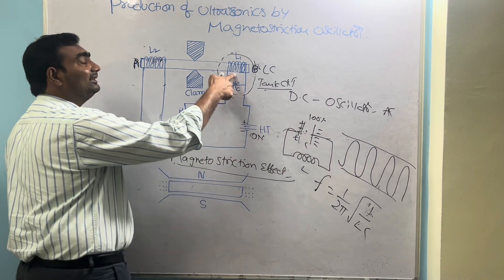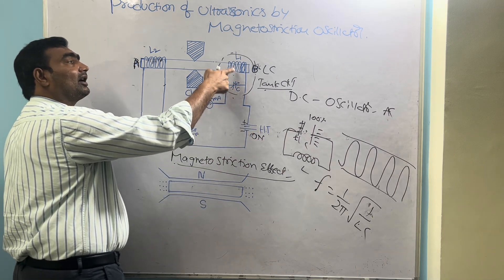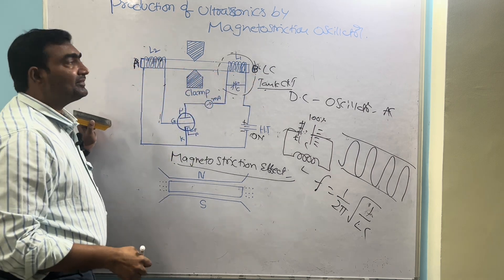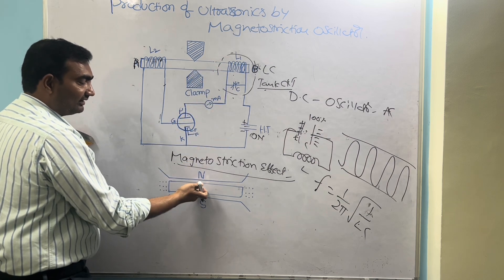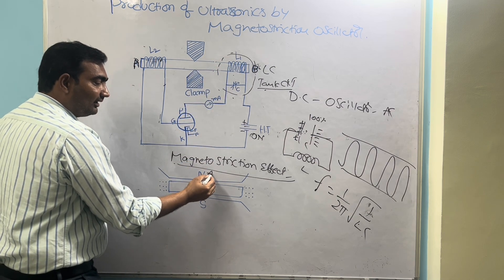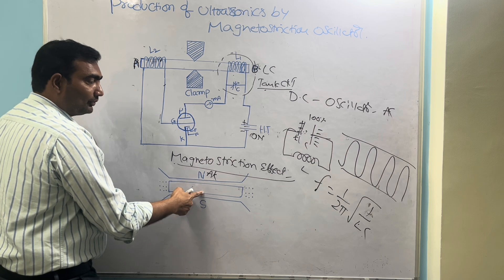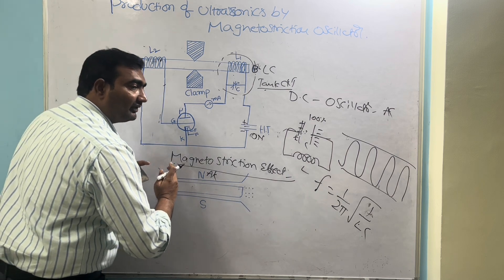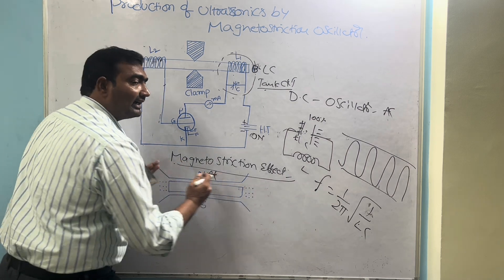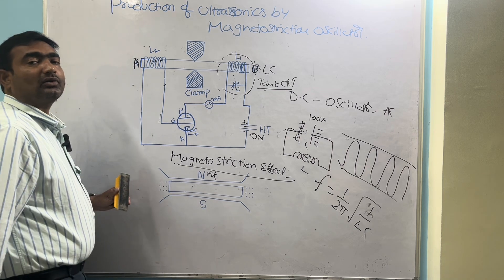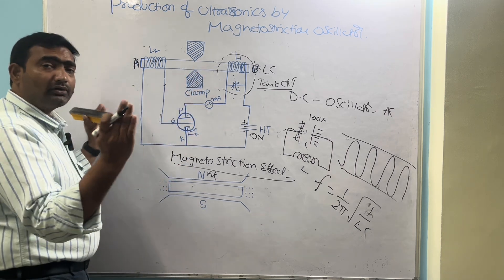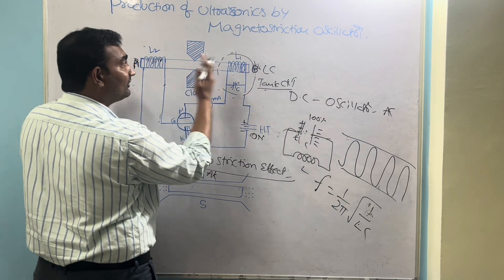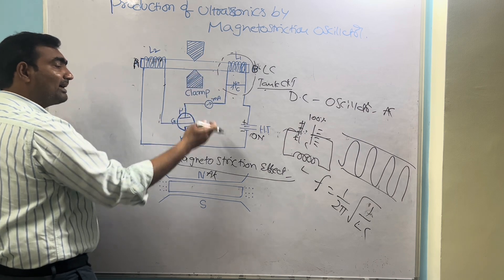This AC signal is applied to the ferromagnetic rod AB. As discussed earlier, whenever an AC current is applied to this ferromagnetic rod, there is a change in its length — for the positive half cycle the length expands, for the negative half cycle it contracts. So the rod sets into vibrations due to the magnetostriction effect.